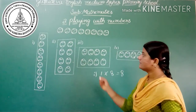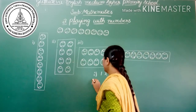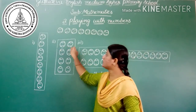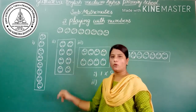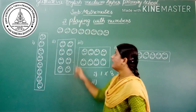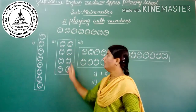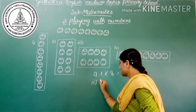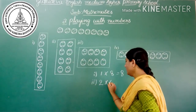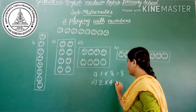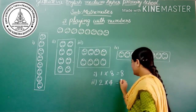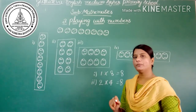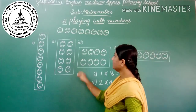Similarly, in the second arrangement, each row has 2 balls. How many rows are there? 1, 2, 3, 4 — there are 4 rows. So I can write it as 2 into 4, which is equal to 8.